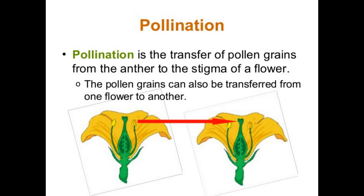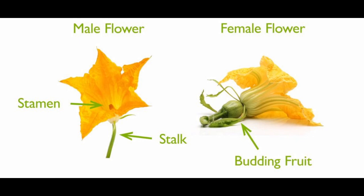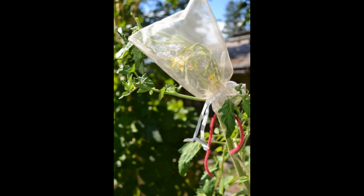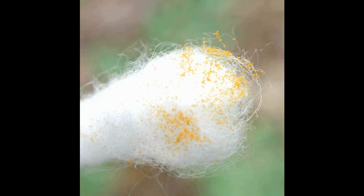The process of pollen grains reaching the stigma from the anther is called pollination. To understand pollination, let us do an activity. Select a bottle gourd plant in a garden and observe the flowers — bottle gourd has unisexual flowers, meaning male and female flowers are separate. Select 10 female buds, cover them loosely with polythene bags and tie them. Make tiny holes in the bags with a pin. Two days later, observe the buds — they will be blooming. Now pluck some male flowers, collect the stamens, and shake them to collect pollen grains on a sheet of paper.